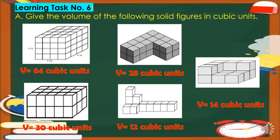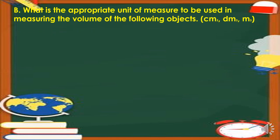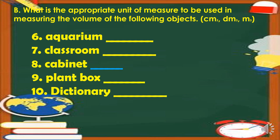For letter B, identify the appropriate unit of measure for measuring the volume of the following objects — choosing from cubic centimeter, cubic decimeter, and cubic meter. Number 6, aquarium: cubic decimeter. Number 7, classroom: cubic meter. Number 8, cabinet: cubic meter. Number 9, plant box: cubic decimeter. Number 10, dictionary: cubic centimeter.